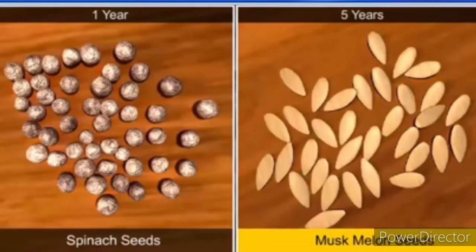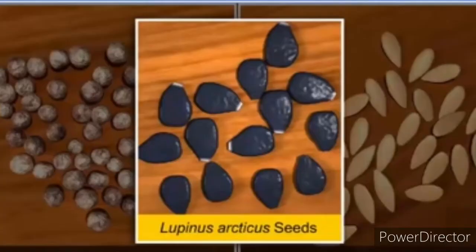Seeds of a large number of species live for several years. Some seeds can remain viable for hundreds of years. The record for the oldest viable seed is the lupine, Lupinus arcticus, from the Arctic tundra, which germinated and flowered after a record 10,000 years of dormancy. Recently, a 2,000-year-old viable seed of the date palm, Phoenix dactylifera, was discovered during archaeological work at King Herod's palace near the Dead Sea.